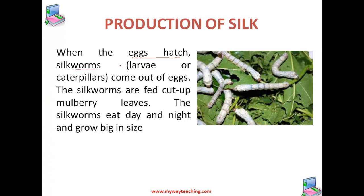When these eggs hatch, the silkworm, or larvae, or caterpillar — it's one and the same thing — comes out of these eggs. These silkworms eat mulberry leaves, and the farmers cultivate mulberry plants so that they can rear the silkworms. The silkworms eat day and night and grow big in size.